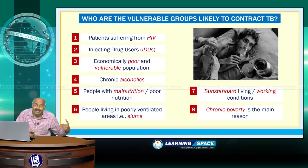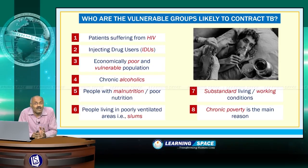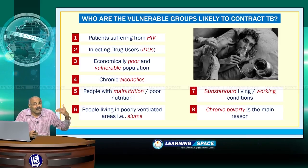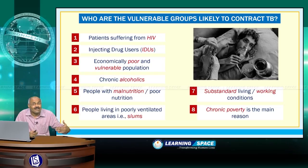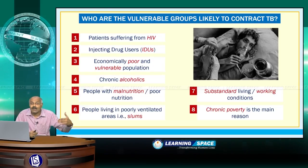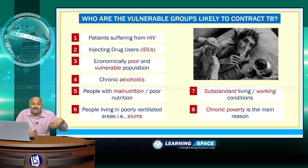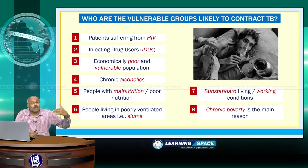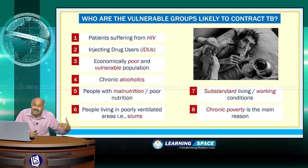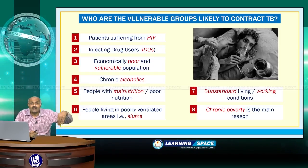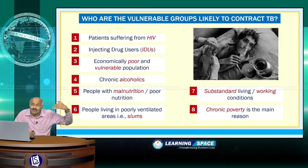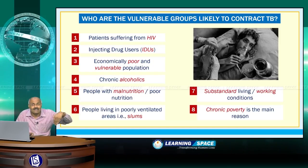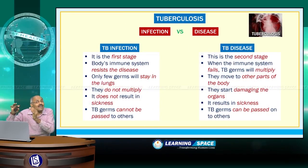Tuberculosis can be contracted by patients suffering from HIV, injecting drug users, economically poor and vulnerable populations due to poor nutrition or malnutrition, chronic alcoholics whose resistance is reduced, and people living in poorly ventilated areas such as slums or workplaces with substandard living or working conditions. Overall, chronic poverty is the main reason for contracting this infectious disease.